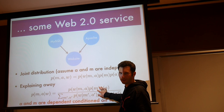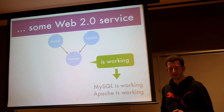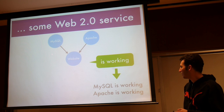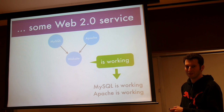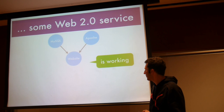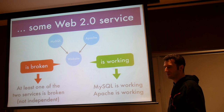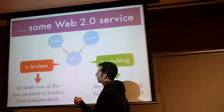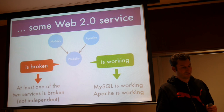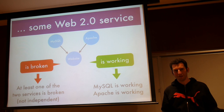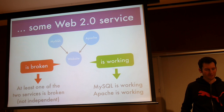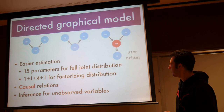An interesting thing is that as soon as I start observing what my website is doing, MySQL and Apache stop being independent of each other. You can work that out immediately just by Bayes' rule — in the denominator you see p of w given m and a, which now couples m and a. So if I know my website is working, by virtue of that observation I know those two things are working. If it's broken, I know at least one of those two services is broken — that's how you debug a service.